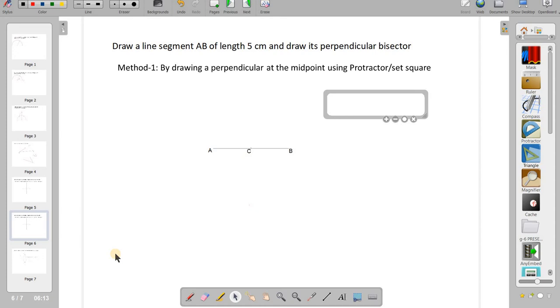The given line segment AB is of length 5 cm. We will be drawing the perpendicular bisector using protractor.